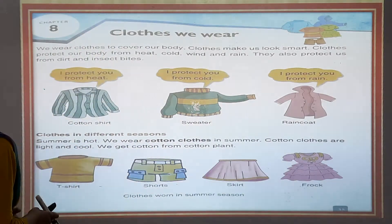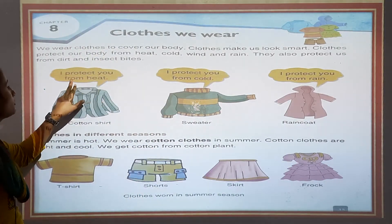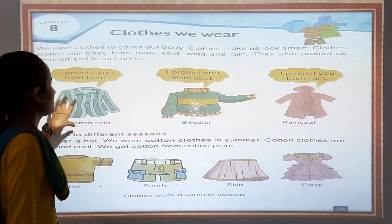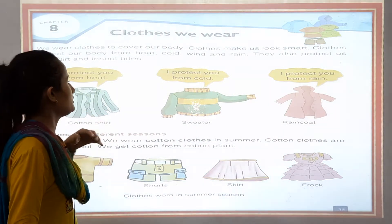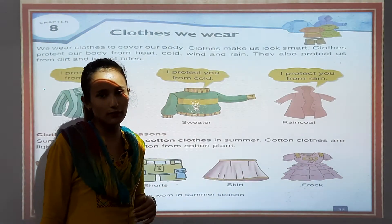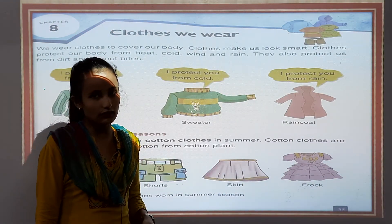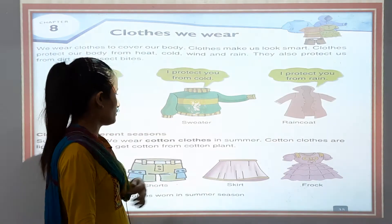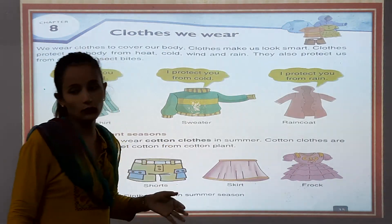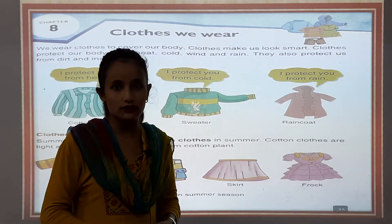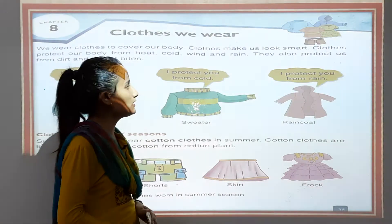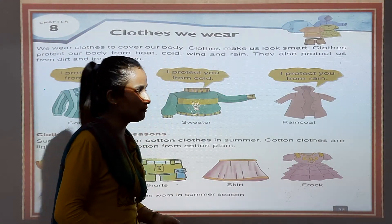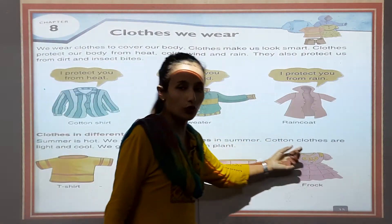Cotton shirt protects you from heat. Whenever it is summer season, we wear cotton clothes. Woolen clothes like a sweater protect you from cold — in winter season we wear sweater, woolen clothes. And a raincoat protects you from rain. बारिश से भी कपड़ा बचाता है।